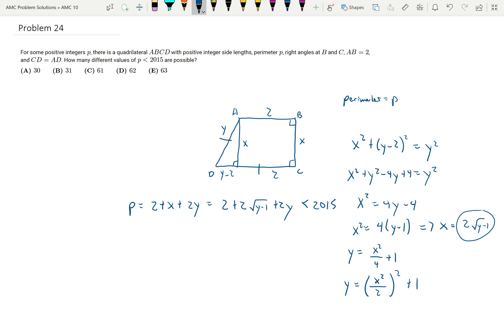So first, just looking at the values that Y can be. If X is equal to 2, then Y is going to be equal to 1 squared plus 1, which equals 2. If X equals 4, Y is then going to be equal to 2 squared plus 1, which equals 5. And the reason why these are checking out is when I plug these values in to the equation up here, the perimeter is still going to be less than 2015.